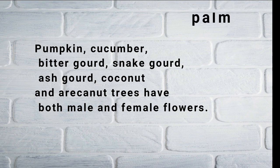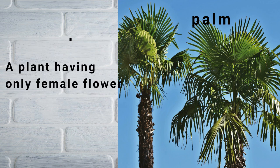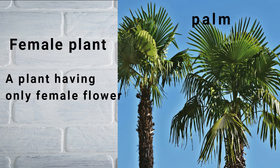For a male plant — a plant having only male flowers — take the example of palm. One plant may be only male and another plant might be only female, meaning it has only one type of flower in the entire plant. And that's the general concept — that's it for today's class.